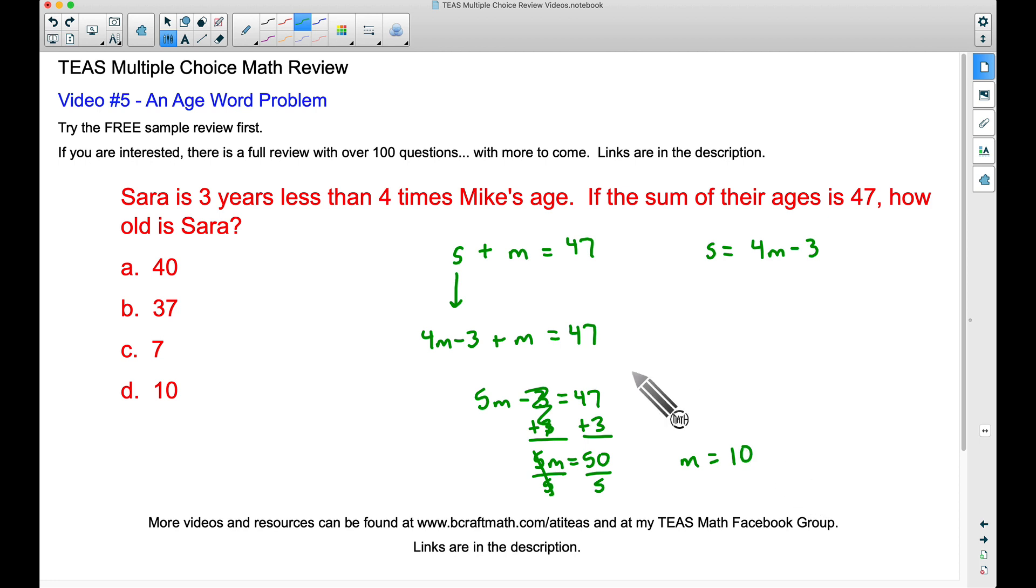If you do not read the question carefully, you may say D is my answer because I got a number that matched. Be careful. The question asks how old is Sarah? Now that we know Mike is 10 years old, go back to this equation. Sarah is 4 times Mike's age minus 3. Therefore, Sarah equals 4 times 10 is 40 minus 3. This gives us Sarah's age of 37 years old. Our answer is B.